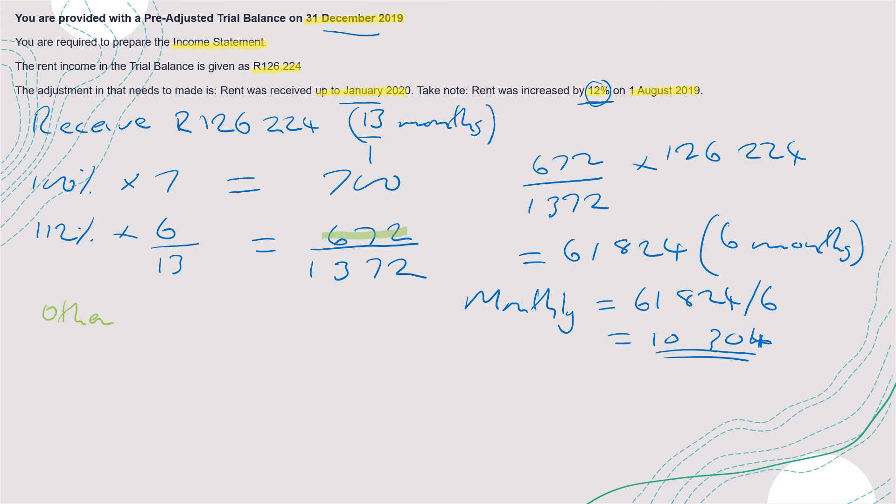Other incomes. Then we have rent income. That will be 126,224 minus 10,304.